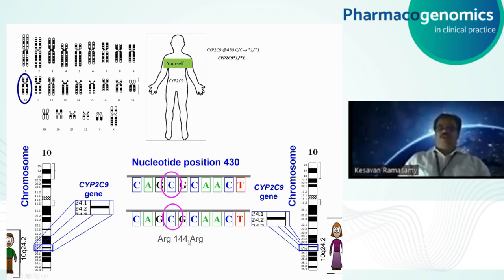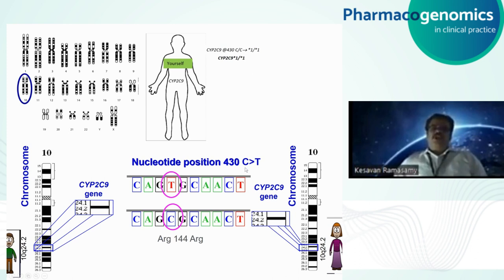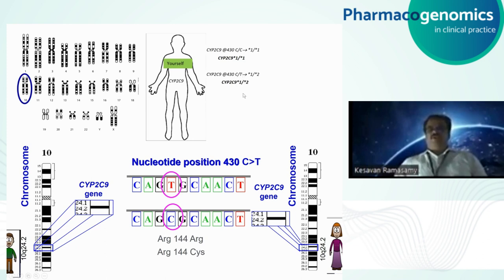When C is replaced by T at position 430, if the paternal copy carries this variant T while the maternal copy still has the normal allele, the genotype will be CYP2C9 star 1 / star 2 — meaning one copy is C and the other is T. Whenever there is a changing variant, we give a new numbering designation. The C-to-T change at position 430 is designated star 2. If it happens in one copy and the other copy is normal, we designate it star 1 / star 2.